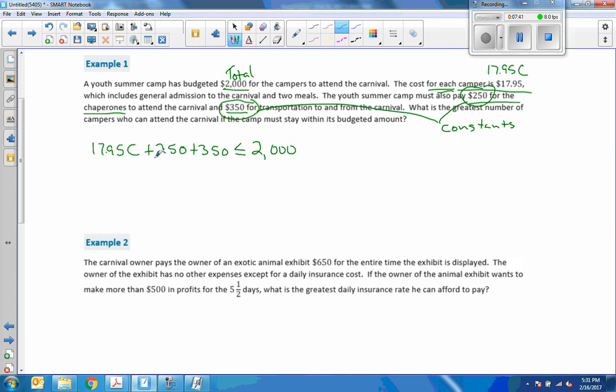We're going to combine our like terms, which are our constants right here. So we have $17.95C plus 0 plus 0 is 0. 5 plus 5 is 10. 3 plus 1 is 4. Plus 2 is $600. It's less than or equal to $2,000. Now we do SADMEP and we have addition. The inverse of addition is subtraction. So to get rid of that $600, we subtract $600 from both sides. And these cancel and I get $17.95C is less than or equal to $2,000 minus $600 is $1,400.